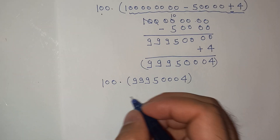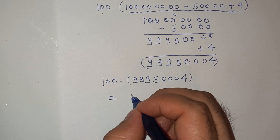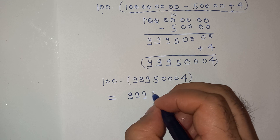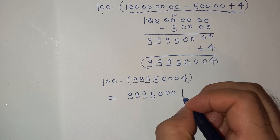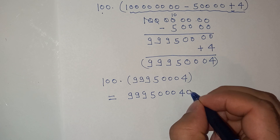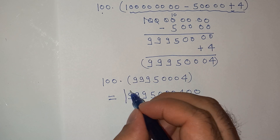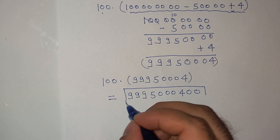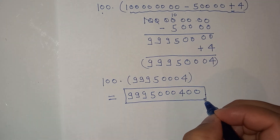This is easy to solve. The final value equals 99,500,004 multiplied by 100, so we append two zeros at the end. The final answer to this question is 9,950,000,400.